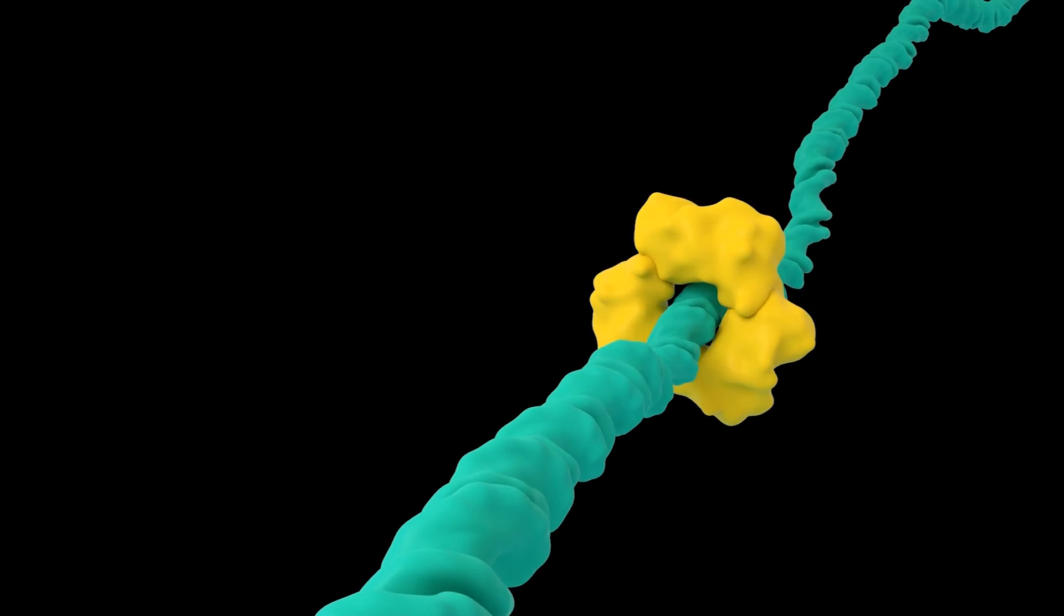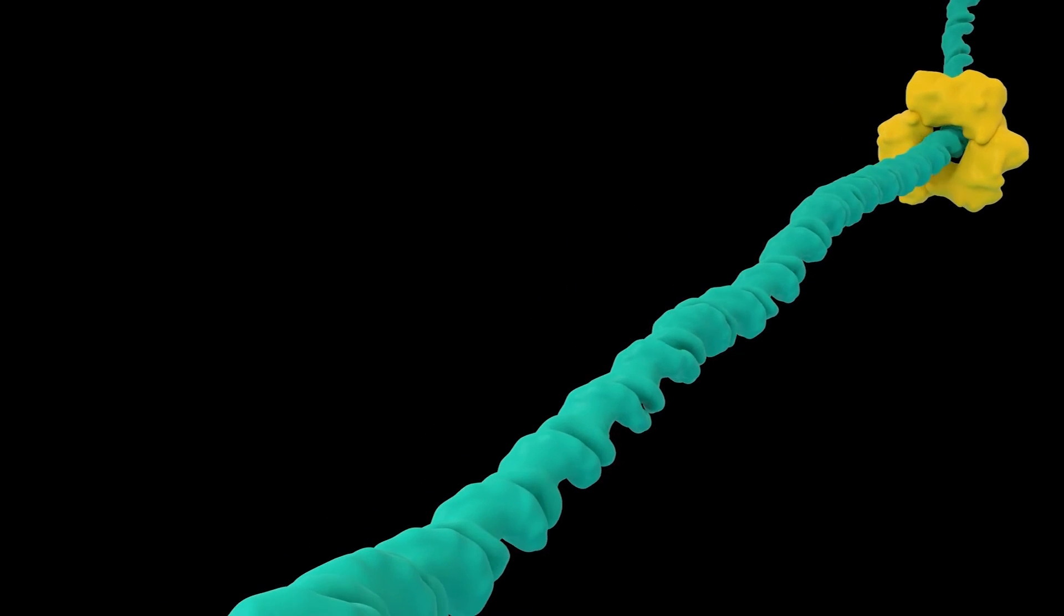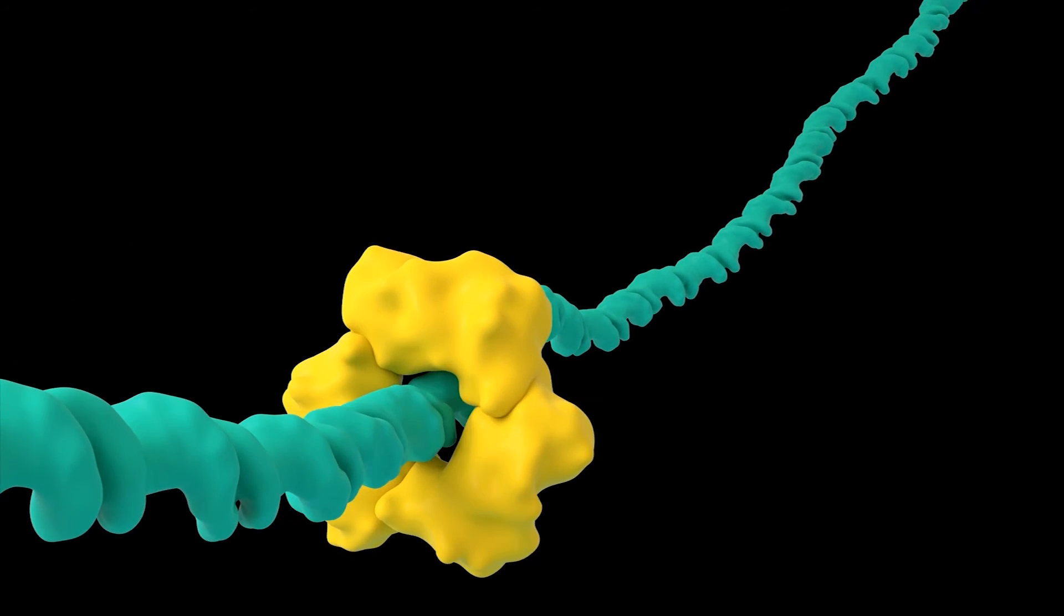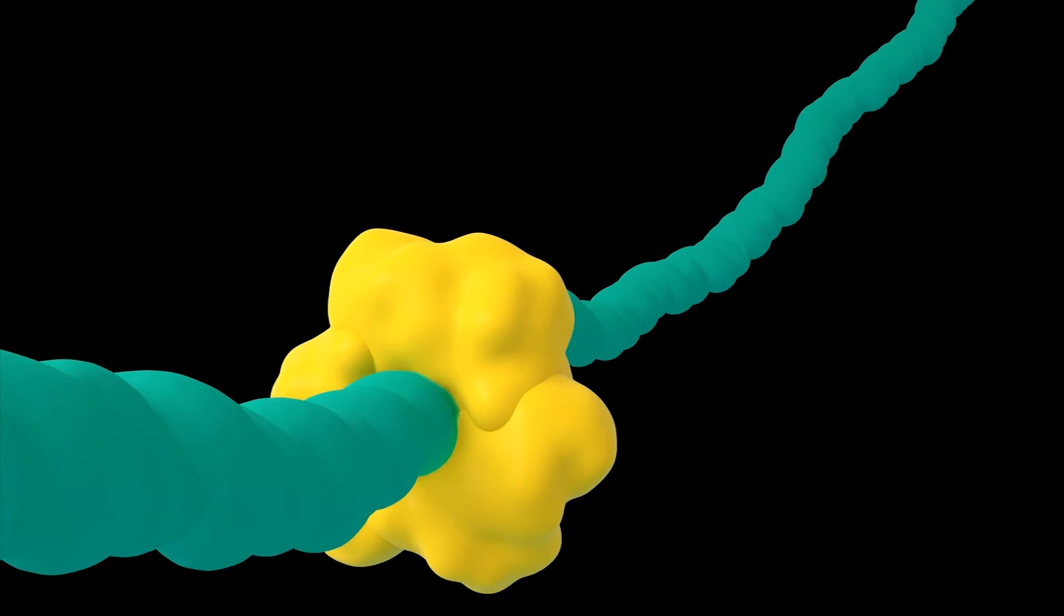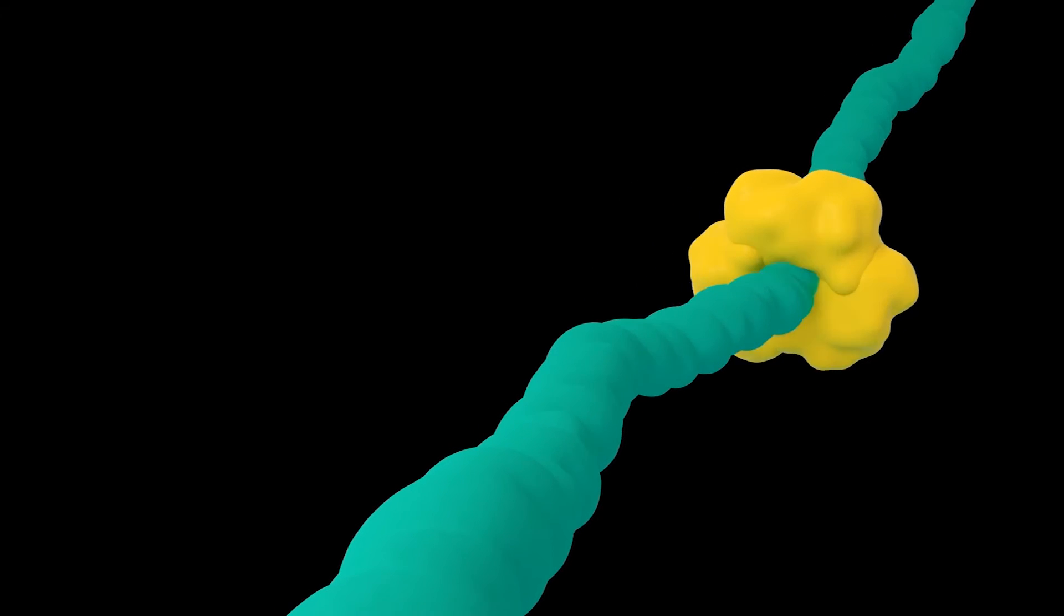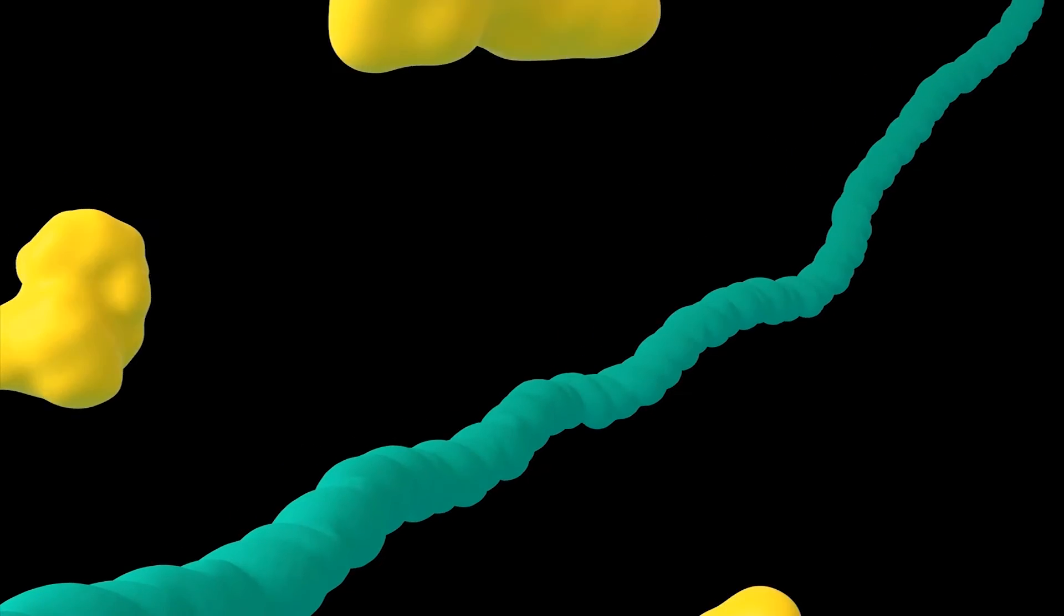Remember, structure defines function. So with a tighter surface mesh we can see that there's a small gap between the DNA and this clamp, allowing it to slide along. But with coarser meshes this clamp appears to be intersecting the DNA, which changes the interpretation of the process. It also implies that the atoms that make up these structures are intersecting, which isn't physically possible.